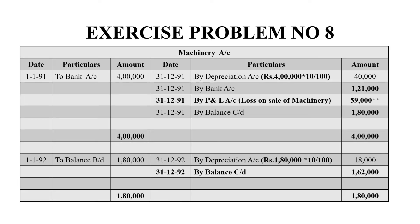We open the machinery account. They have purchased machinery on 1-1-91. So on the debit side, we have bank account for 4,00,000. And on 31-12-91, for the 4,00,000 worth of machinery, depreciation is 40,000 — that is 4,00,000 into 10 divided by 100 equals 40,000.